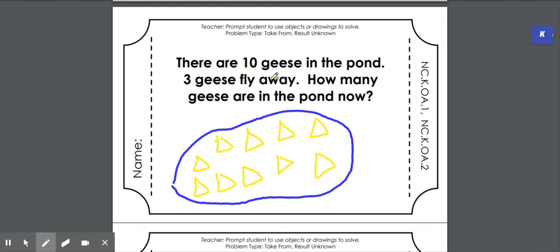Three geese fly away. So if these geese are flying away, they're not going to be in the pond. So I'm not going to draw three more geese. I need to cross out three of my geese. So here I go. One. Two. Three. Three geese are gone.